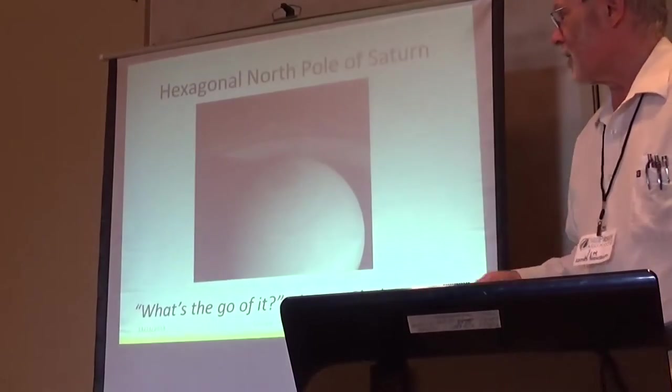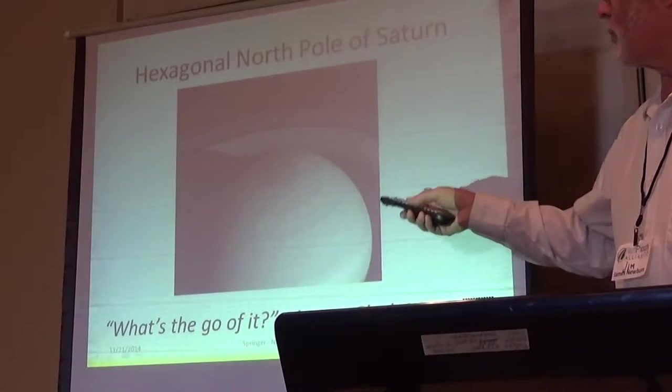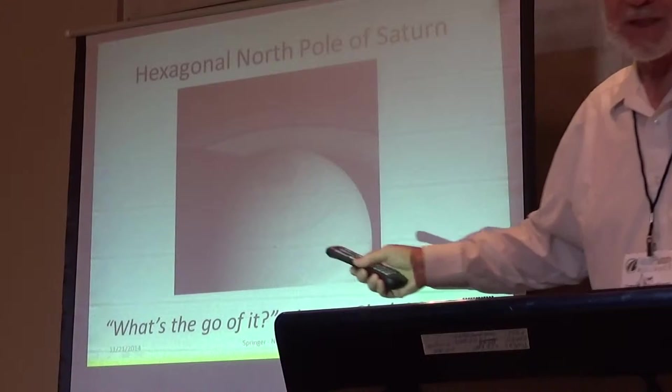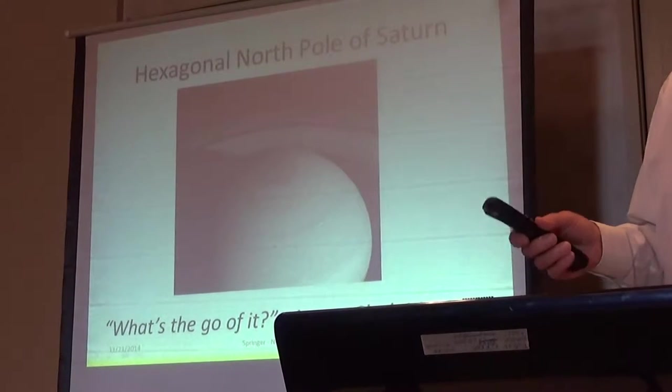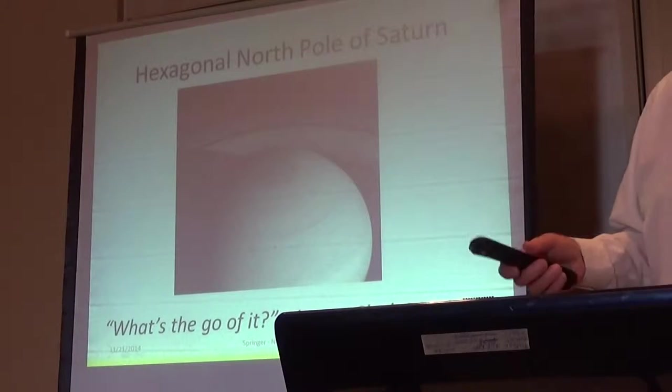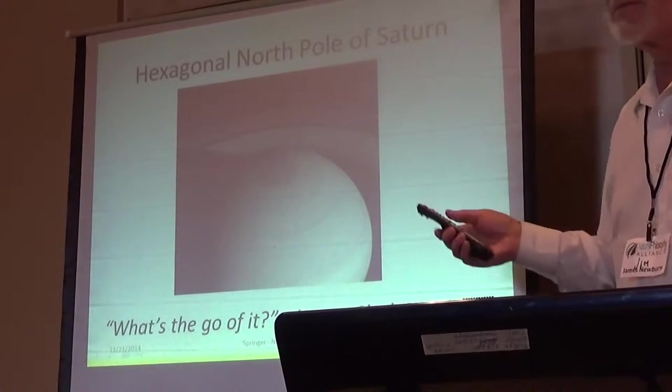So a lot of you are probably aware, in the North Pole of Saturn, there's this hexagon. It doesn't show very well in this picture. I've got better pictures. Voyager first found it, I think Voyager 2 about 30 years ago, and then the Cassini satellite has done extensive pictures of it.